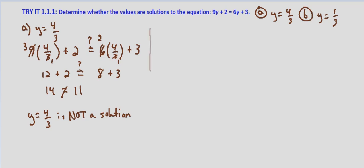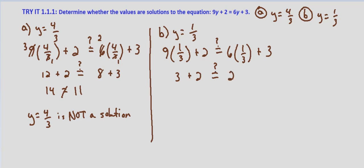And now we will turn to our second value. In part b, we're asked to determine if y equals 1 third is a solution. So again, substituting into our equation 9 times 1 third plus 2 equals 6 times 1 third plus 3. 9 times 1 third is 3. So 3 plus 2. And does that equal 6 times 1 third is 2 plus 3. And we do indeed end up with a true statement of 5 equals 5. So y equals 1 third is a solution.